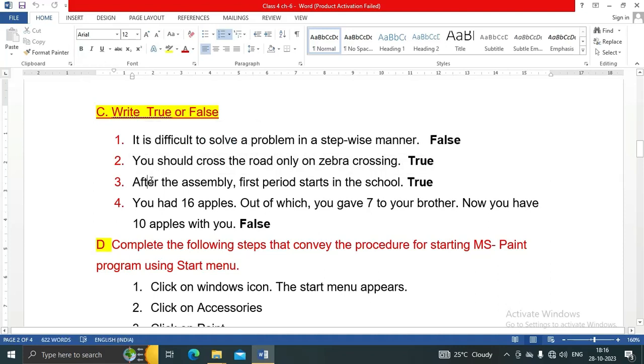'After the assembly, first period starts in the school.' Right, true. It generally happens in every school. 'You had 16 apples, out of which you gave 7 to your brother. Now you have 10 apples with you.' Yes, this is a false statement. 16 minus 7, it should be 9. How could it be 10 apples, right? So false statement.